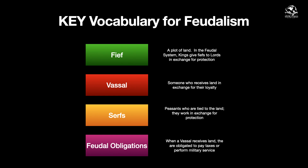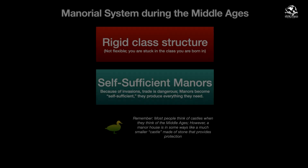Vassal is probably the most missed word for students - it's difficult to comprehend - but if you receive a fief or land, that makes you a vassal to the person who gave it to you. Serfs are peasants who are tied to the land; they work in exchange for protection, they don't get paid - they get food, protection, and a safe place in case of invasion. When a vassal receives land they're obligated to pay taxes and perform military service - these are feudal obligations.